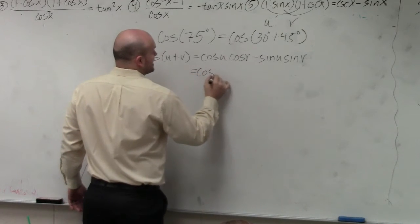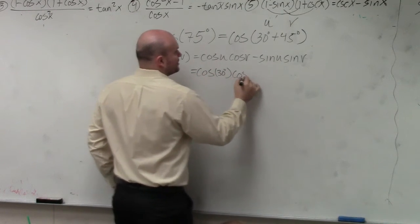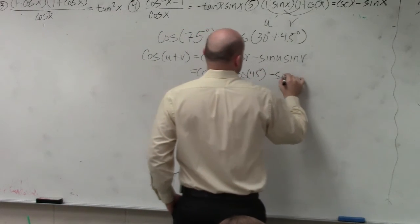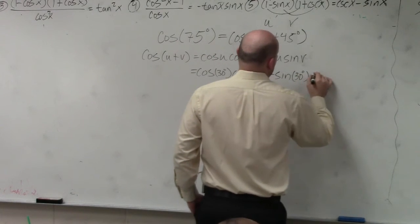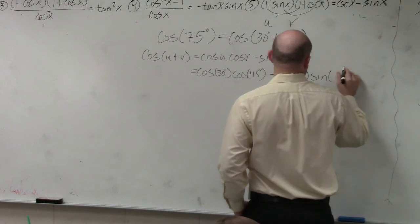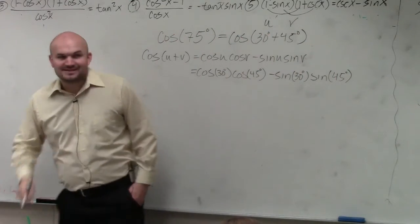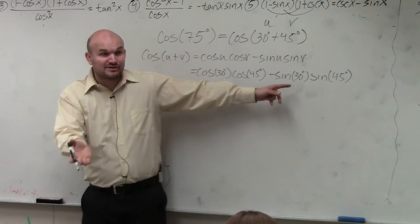So we have the cosine of u is 30 degrees times the cosine of v, v is 45 degrees, minus the sine of u, which is 30 degrees, times the sine of v, which is 45 degrees. Now, do you guys see how we have to evaluate 1, 2, 3, 4? Kind of like four problems on your test, right?